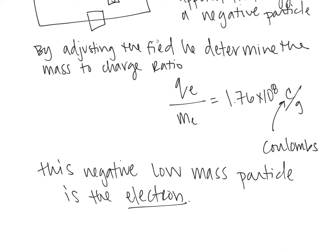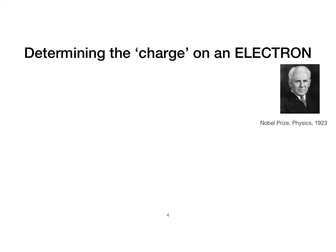J.J. Thompson is credited with this discovery. The next thing scientists were curious about was the charge on an electron. Instead of just the charge-to-mass ratio, if you could discover either the mass or the charge, you could calculate the other. The next scientist in our series is Robert Millikan, an American physicist. In 1909, he conducted his now famous oil drop experiment. If we sketch out this device, it is a large oil-type drum.